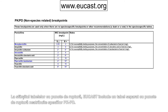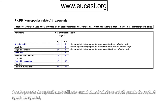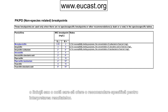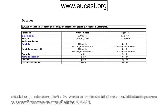At the end of the breakpoint table, EUCAST includes a separate table with PKPD breakpoints. These breakpoints are used only when there are no specific breakpoints for the species in question — a dash or a note giving a specific recommendation for how to interpret results. The table of PKPD breakpoints is followed by a table listing dosages on which EUCAST clinical breakpoints are based.